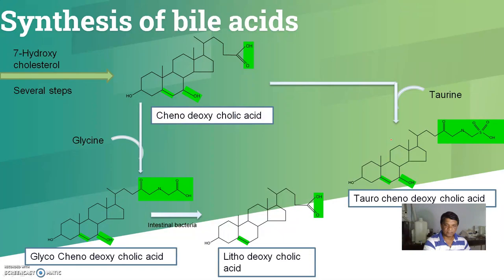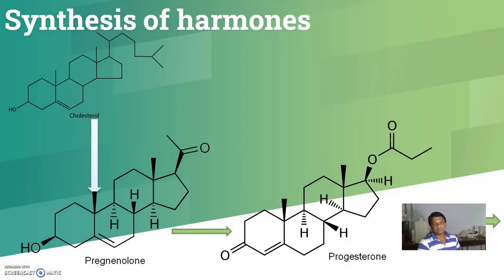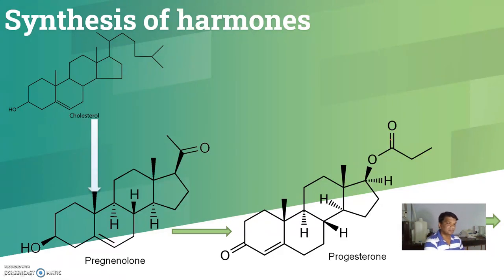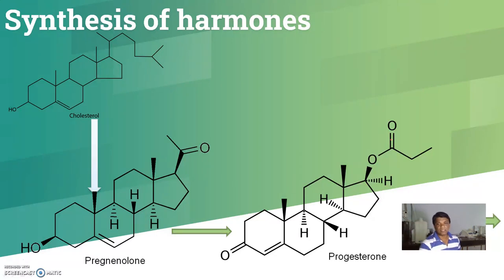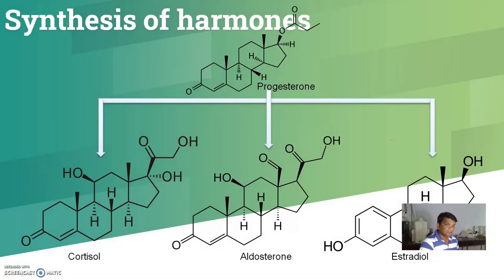Next is the synthesis of hormones. Many hormones in the body — progesterone, testosterone, estrogen — have a steroid structure that is synthesized from cholesterol. Cholesterol gets converted to pregnenolone, and pregnenolone gets converted to progesterone. From progesterone, cortisol, aldosterone, and estradiol are synthesized.